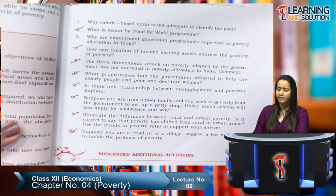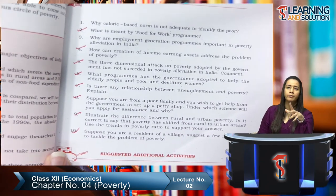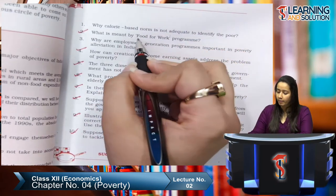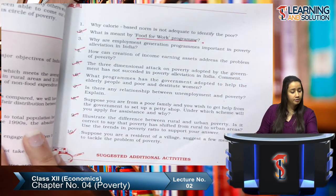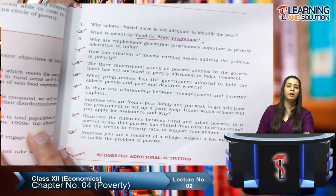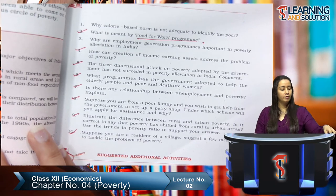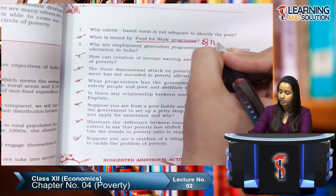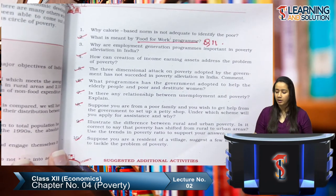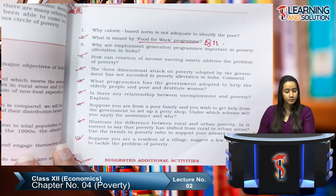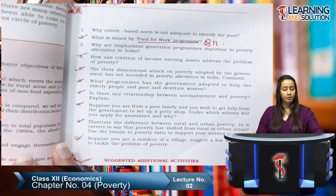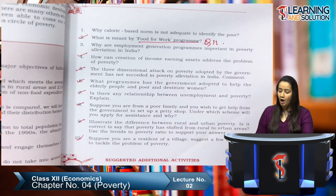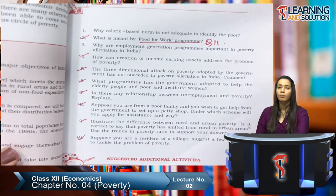Now our NCERT questions. Question one: why is the calorie-based norm not an adequate measure to identify the poor? Question two: what is meant by the food for work program? This is already covered in question 11. Question three: how can creation of income-earning assets address the problem of poverty?